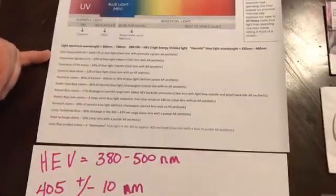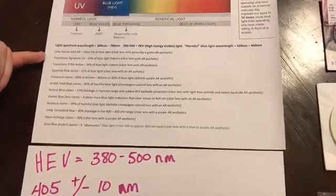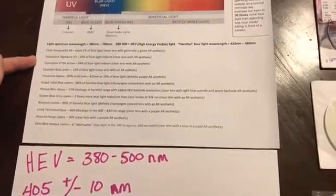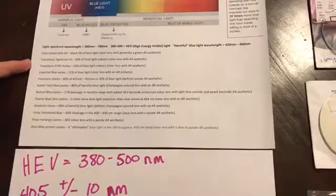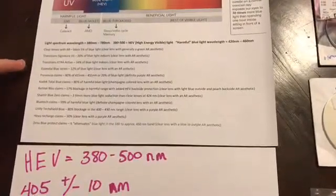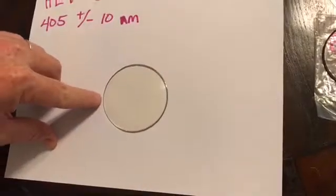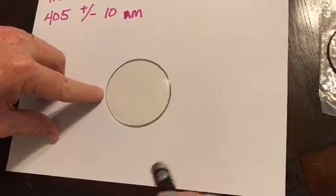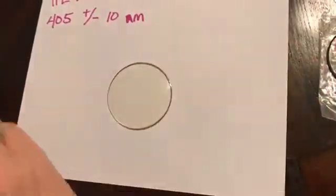First, we have clear lenses with anti-reflective coating. They say that blocks 5% of blue light. Transition's Signature 7 blocks 20% of blue light when it's indoors. That's the lens that I have right here. I have a Transition Signature 7 lens right here, and I will show you that it will activate with a blue light pin.